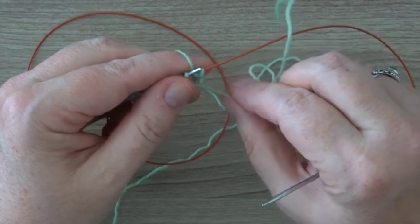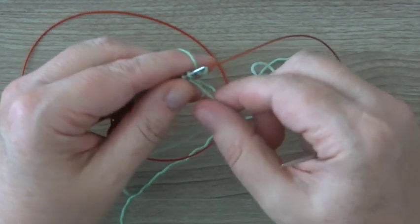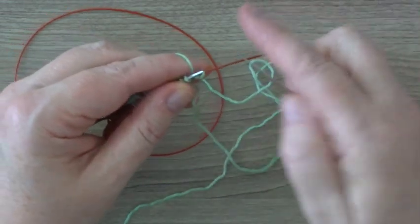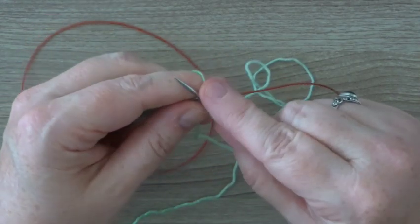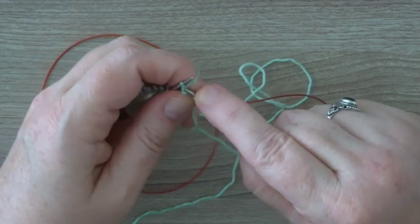And then you can unravel the slipknot before you start to knit. Now you can start a knit-two, purl-two pattern.